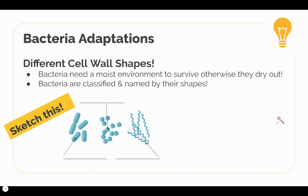Another adaptation that bacteria have is different cell wall shapes. In order to survive, bacteria need moisture and must prevent themselves from drying out, and these different shapes help them do that. There are three shapes you need to know — go ahead and pause to sketch these three different kinds of bacteria, and then we'll label them together.